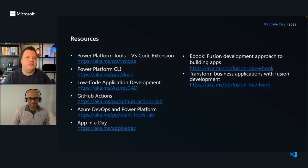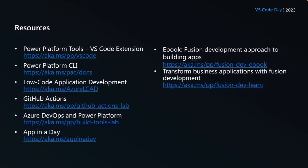Before we leave you, we have some resources to share because we want you to try out all the goodies we've shown. We have links for the VS Code extension, some docs links, GitHub Actions to help automate deployment scenarios, and the same for Azure DevOps. If you want to learn more about Power Apps, there's an app-in-a-day link to Microsoft Learn modules. We also have an e-book talking more about Fusion development, and a learning path for Fusion development as well. With that, we are at the end of the session.